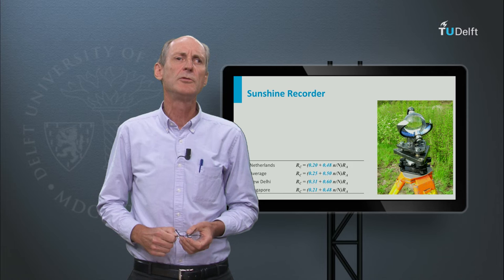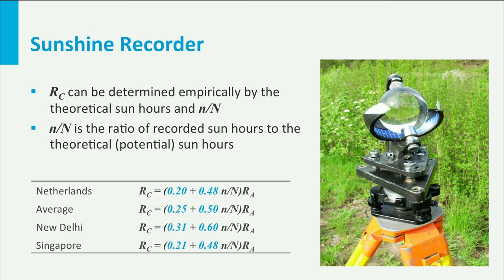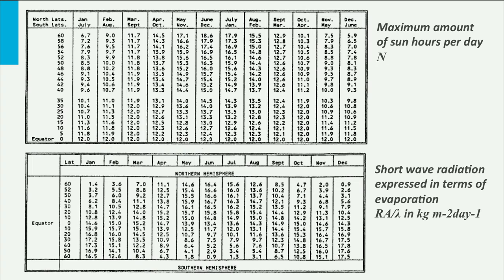We can also use a more classical instrument to determine the number of hours of sunshine: the Campbell Stokes Sunshine Recorder. Depending on where you are on earth, there are different empirical formulas to calculate RC as a function of the number of sunshine hours and shortwave radiation. The potential number of hours depends on the time of year and position on earth, and this is tabulated along with the shortwave radiation above the clouds.